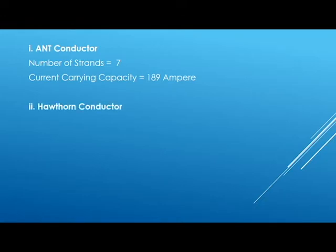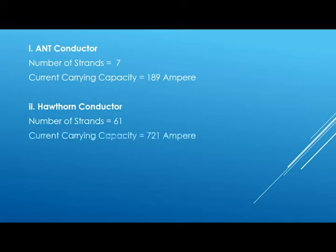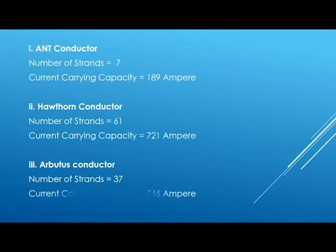The current carrying capacity of the Ant conductor is 189 amperes. Next is the Hathron conductor — the number of strands is 61 and its current carrying capacity is 721 amperes. Third is the Arbutus conductor — the number of strands is 37 and its current carrying capacity is 546 amperes.